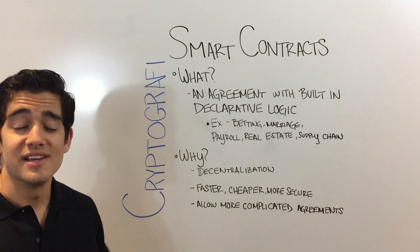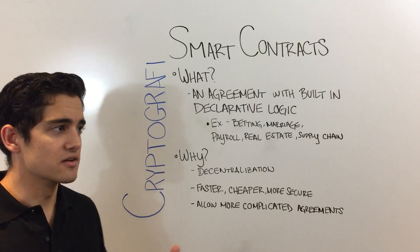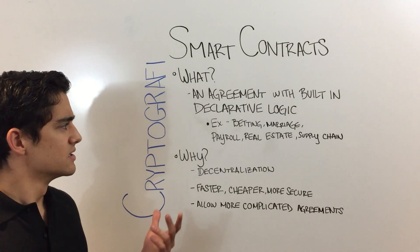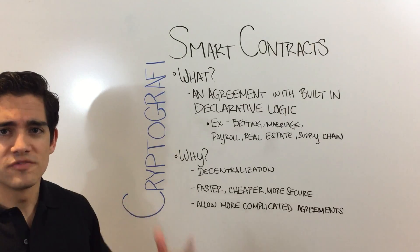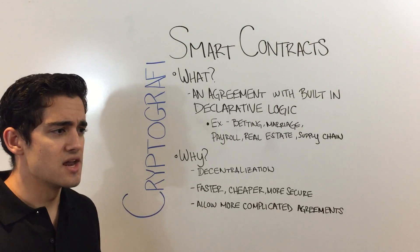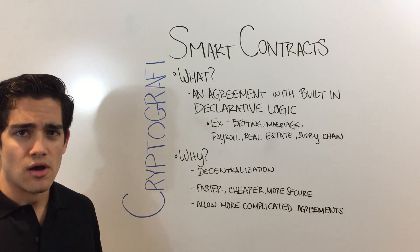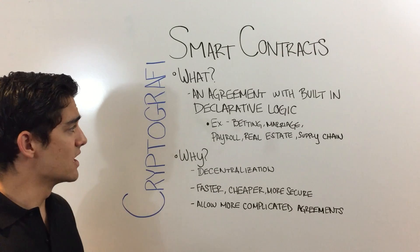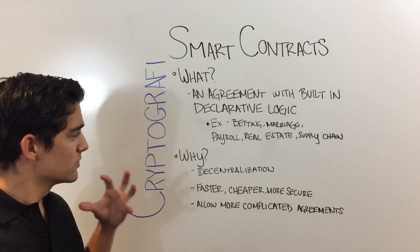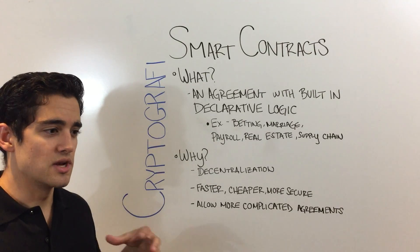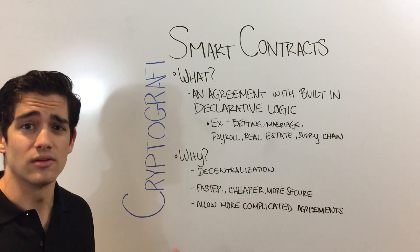Ultimately, smart contracts allow for really complex agreements. In the future, it's not unheard of to think of things like multi-buy real estate, where a bunch of people get into a certain plot of land and shuffle assets around to sell a little bit of their piece. Smart contracts really allow for complex logic that inherent laws and real-world systems weren't made to handle.